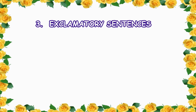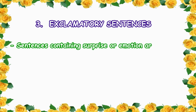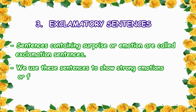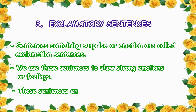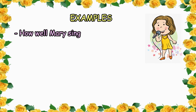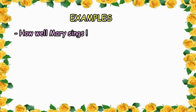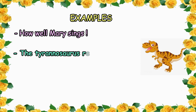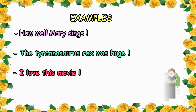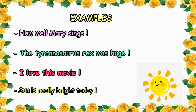Our next type is exclamatory sentences. Sentences containing surprise or emotion are called exclamatory sentences. We use these sentences to show strong emotions or feelings. These sentences end with an exclamation mark. For example: how well Mary sings — here we are showing our surprise at how beautifully Mary sings. Or: the Tyrannosaurus Rex was huge — again this is our surprise. Or: I love this movie! Or: the sun is really bright today!